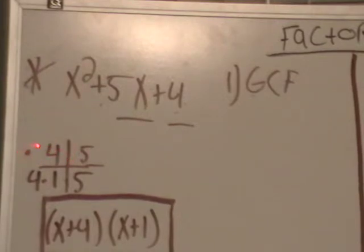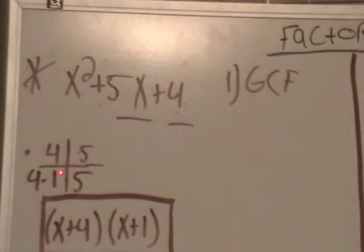So we want to know what multiplies to be 4, adds to be 5. 4 times 1 equals 4. 4 plus 1 equals 5. So those numbers qualify.